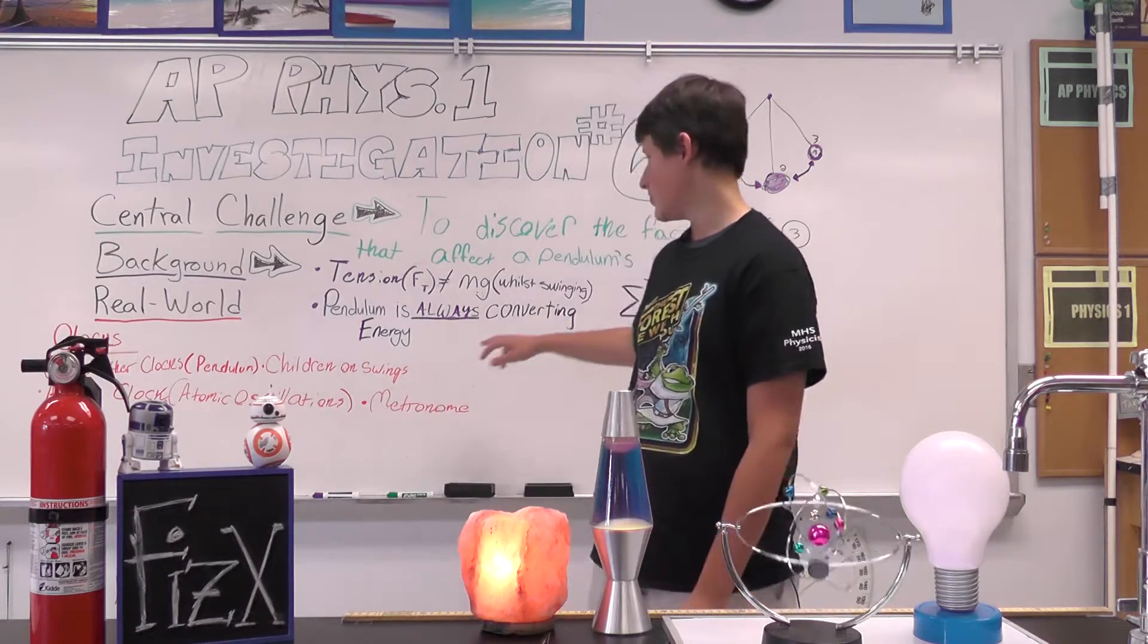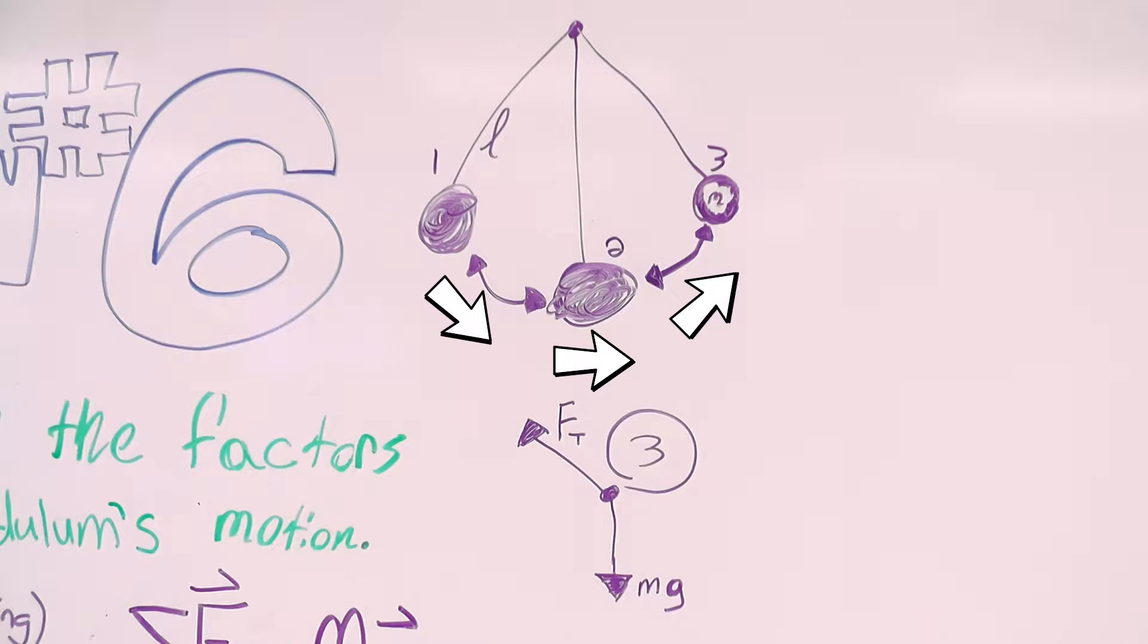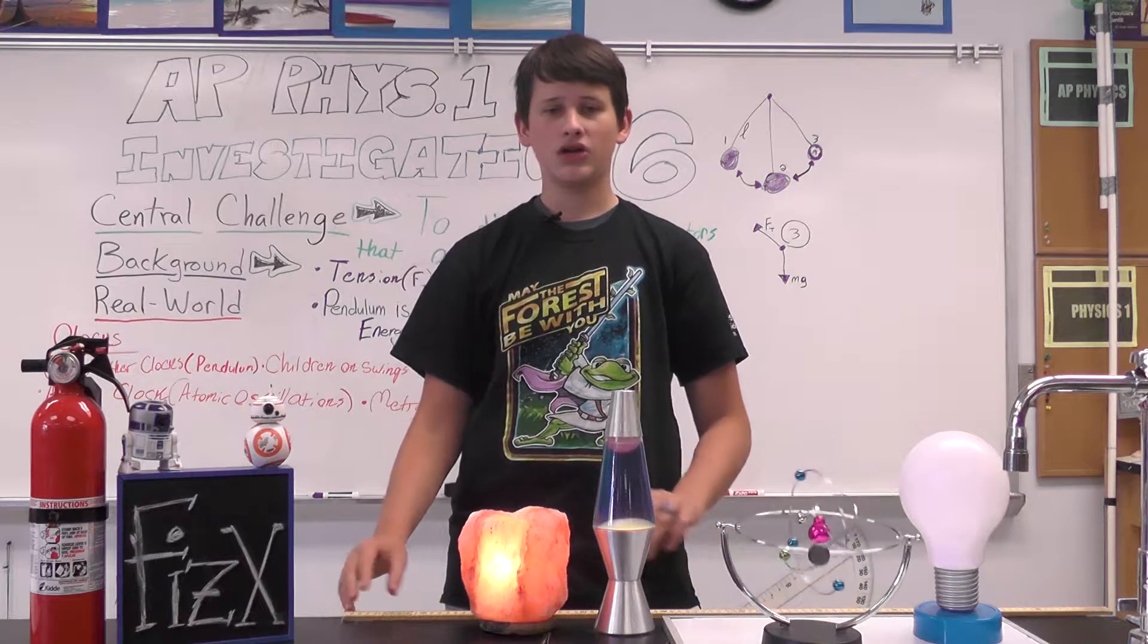As it goes through the swing, the pendulum is converting gravitational potential energy into kinetic energy. So as it gets to the bottom, there's going to be more tension on the string than just the weight. Now we're going to go back to the lab.